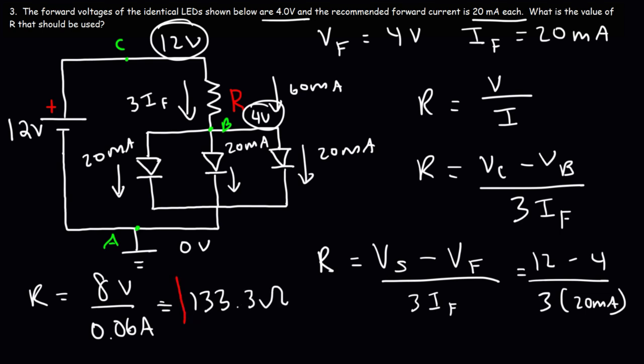That is the resistor value needed for this circuit. If we use a resistor of 133 ohms, we'll get approximately 20 milliamps flowing through each of these identical LED components. Now you know how to calculate the resistor value in a circuit that has LEDs. If you liked this video and felt like you learned a lot, don't forget to like it, leave some comments, and subscribe to this channel.